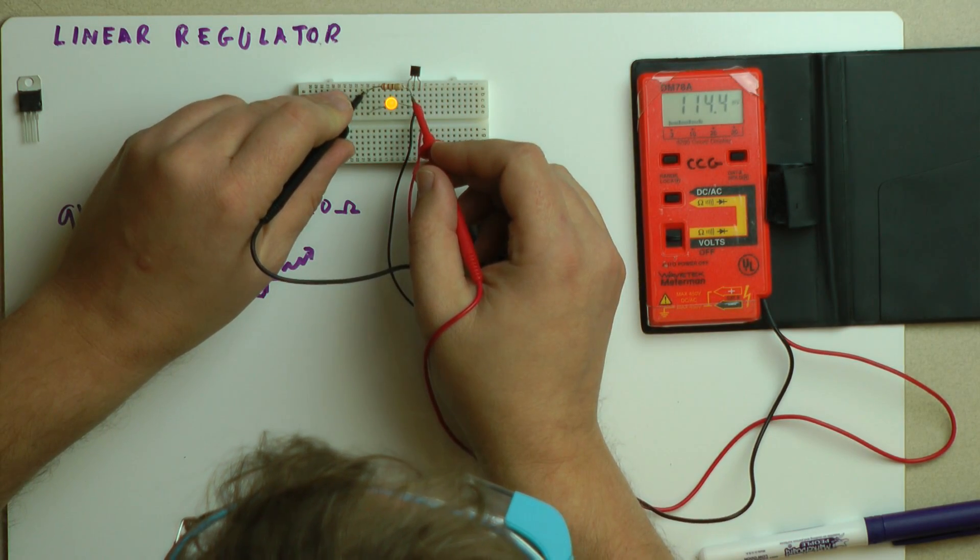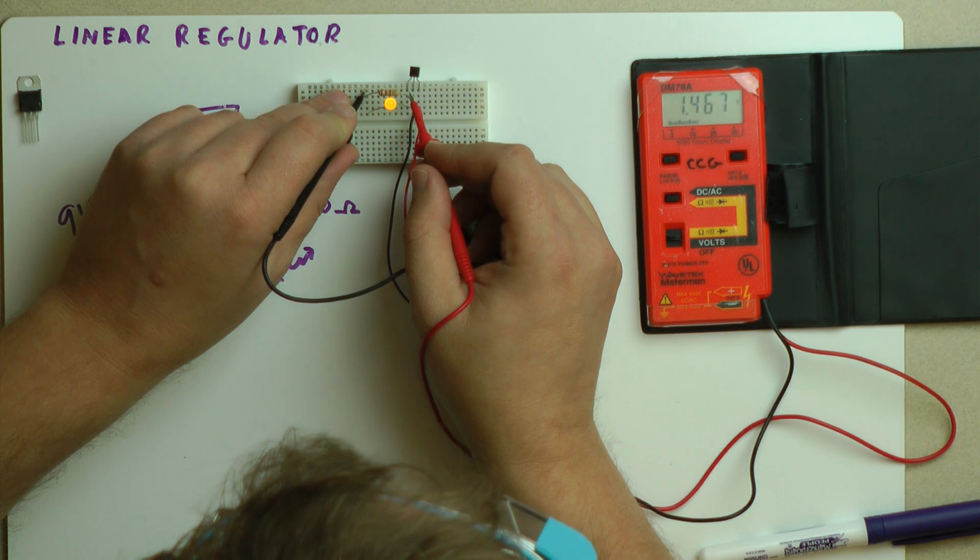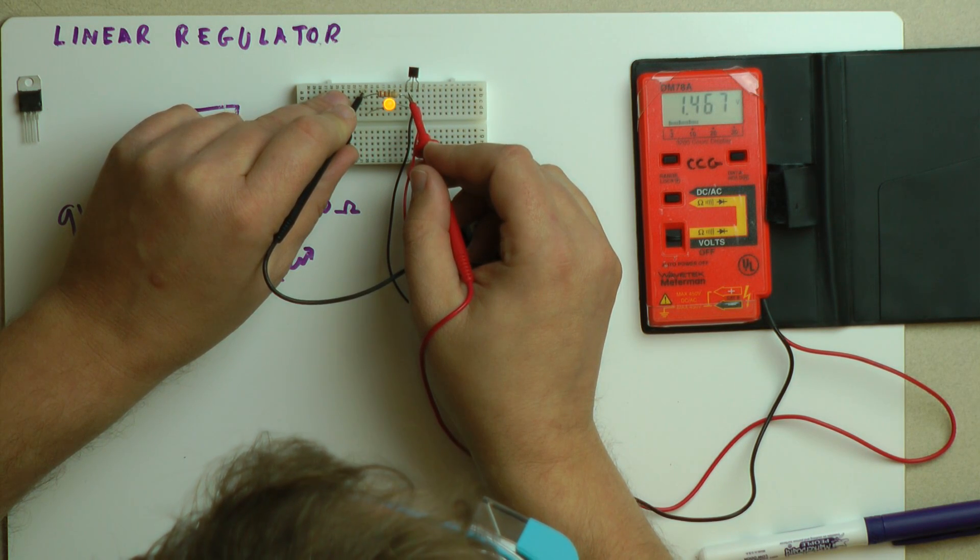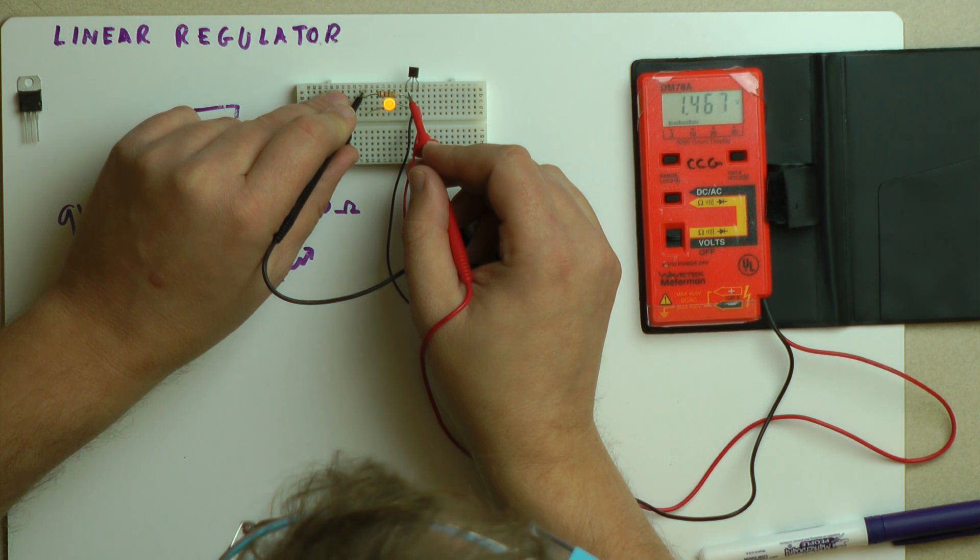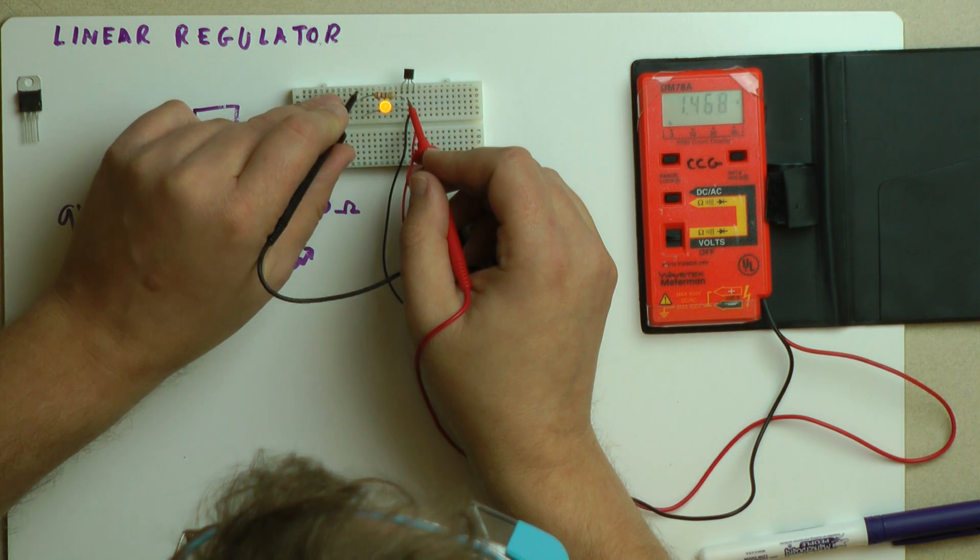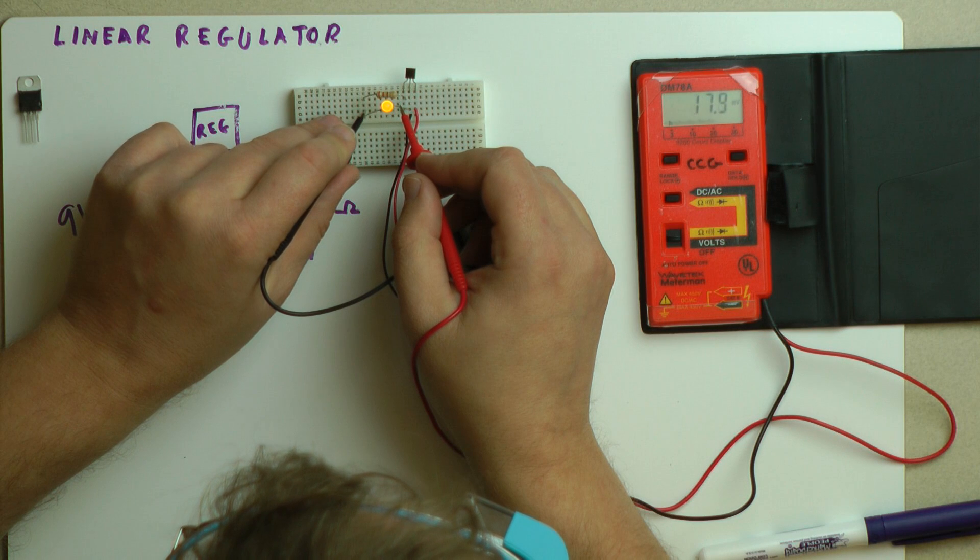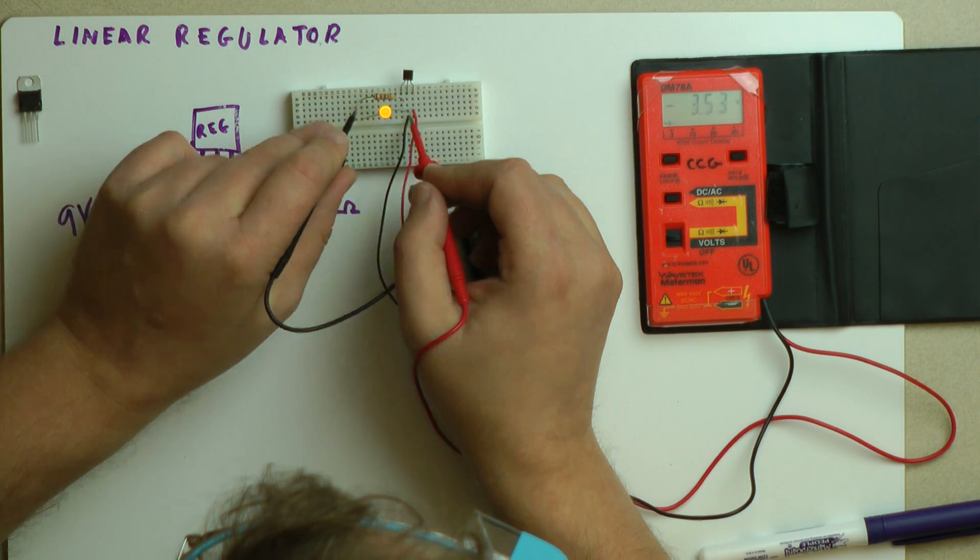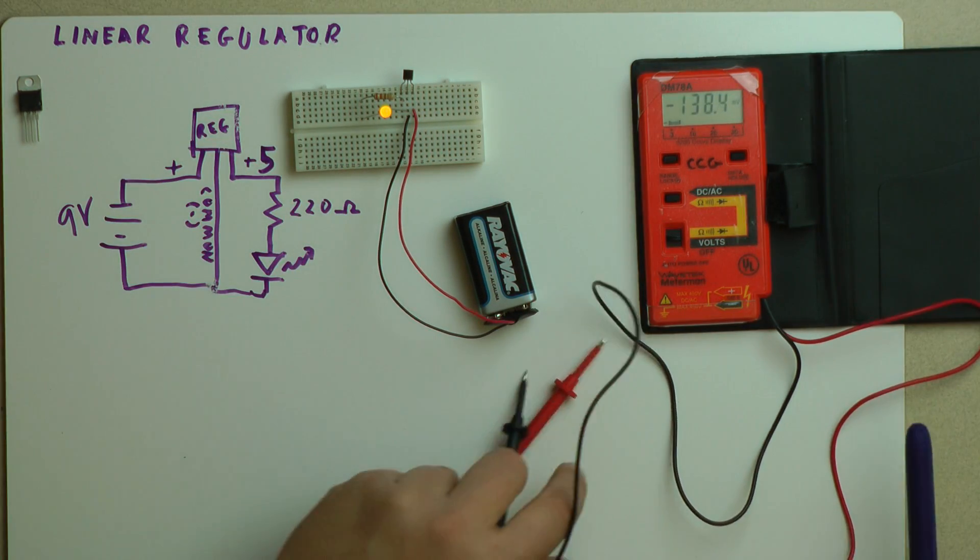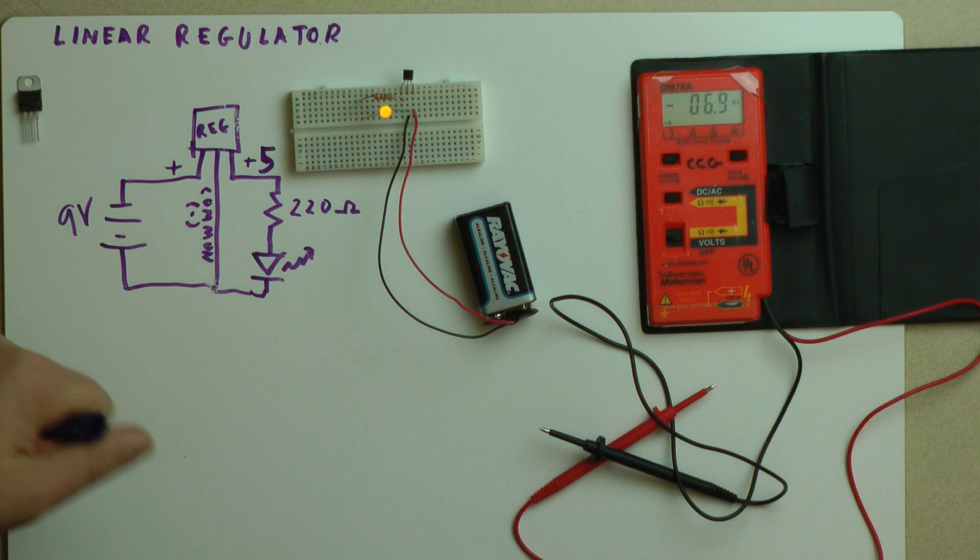So let me actually measure the current on the 5 volt side of the circuit, just to make this point. So I'm going to measure the voltage drop across the resistor. That's about 1.5 volts. So that means that the voltage drop across the LED should be the rest of the voltage drop. So since 5 minus 1.5 is 3.5, that should be what we get, and indeed it is. So 1.5 volt drop across the 220 ohm resistor.